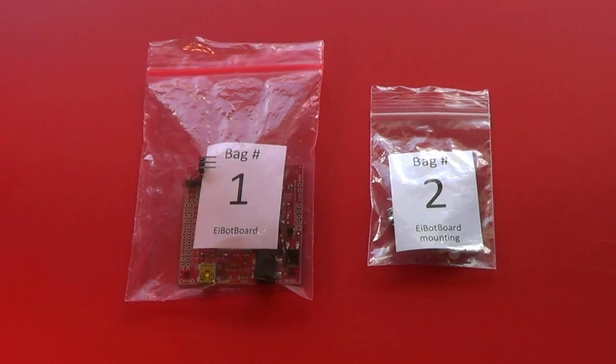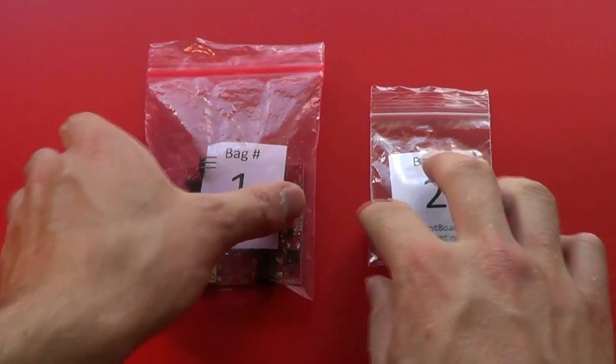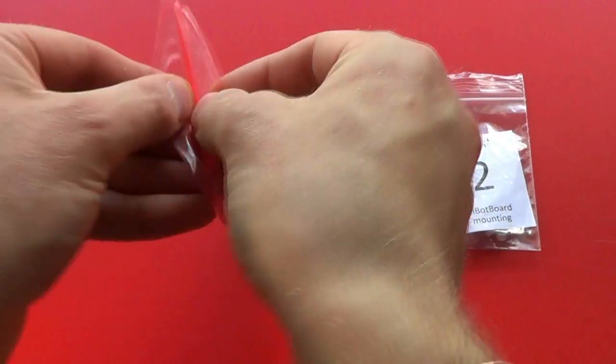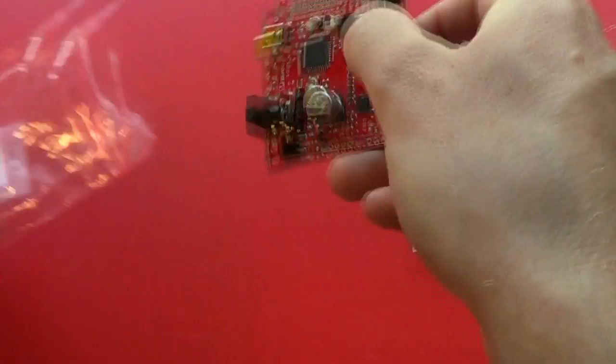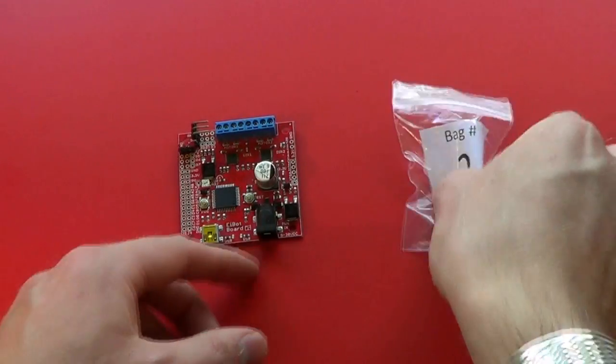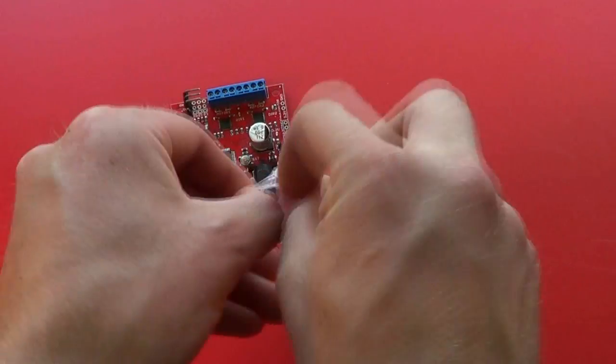Here we're going to mount the iBot board onto the acrylic base. Take the iBot board out of bag number 1 and the mounting hardware out of bag number 2.